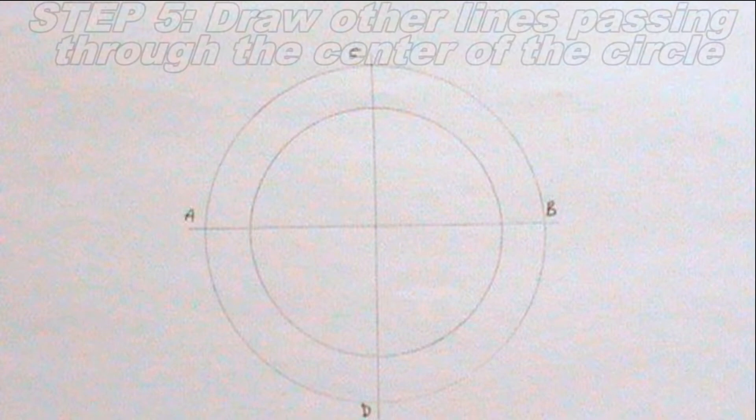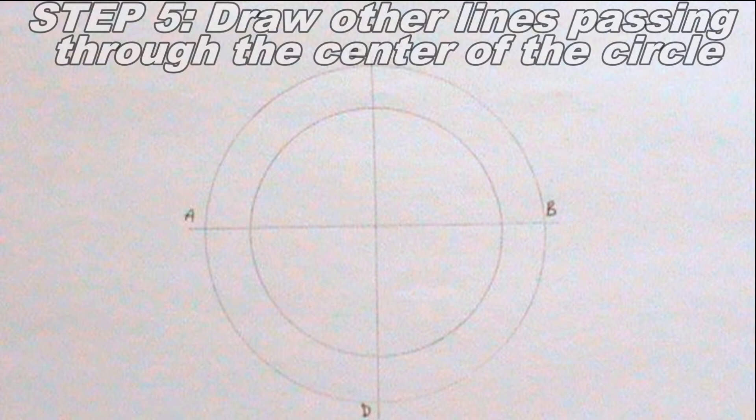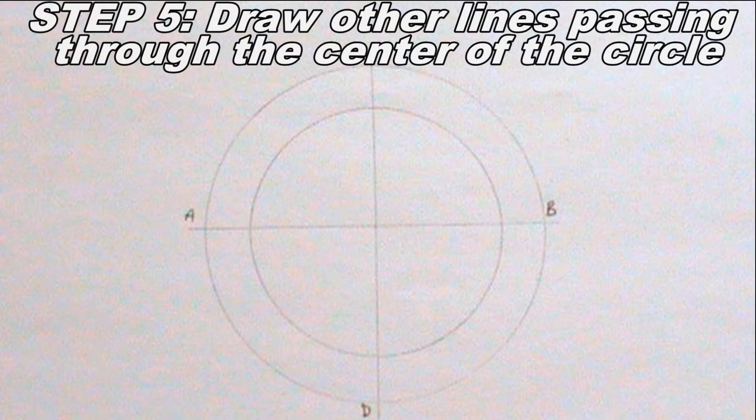Now, using my 60-degree set square, I will draw other lines passing through the center of the circle, thereby dividing the circle into 12 equal parts. This step can be done this way.